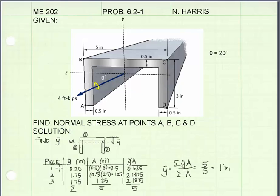I found the area for pieces 1, 2, and 3, and then I multiply y tilde times the area to get this value here.